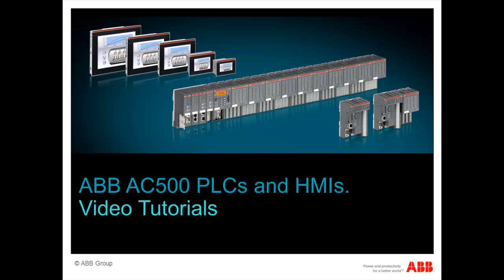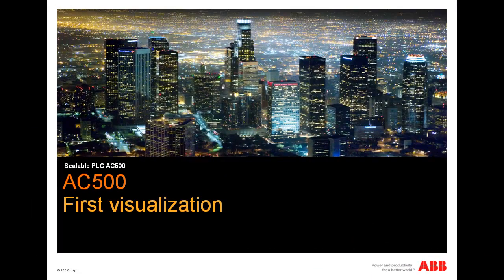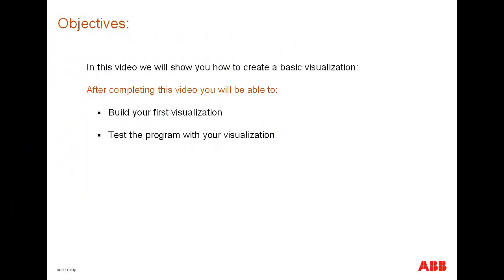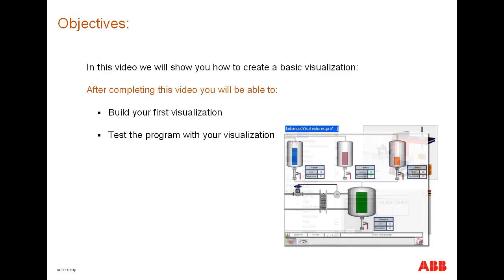Welcome to the video series on ABB AC 500 PLCs and HMIs. On completion of this particular video, you will have an understanding of the integrated visualization feature of the ABB AC 500 controller. The primary objective of this video is to present the fundamental steps pertaining to configuring the frequently used visualization objects, and setting their dynamic properties through appropriate animation schemes for making a meaningful process plant or machine data monitoring and control.